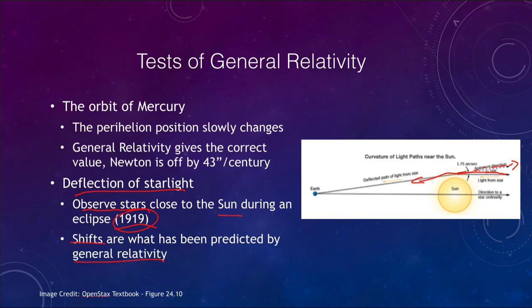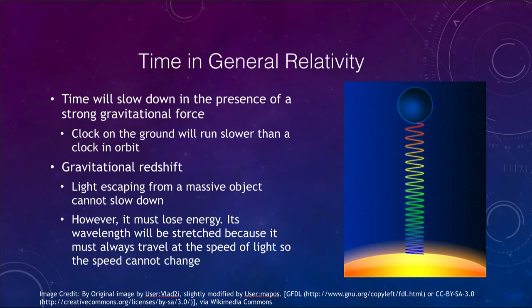Now general relativity looks not just at space but at time as well. So what happens with time in general relativity? A couple things that we see: time will slow down in the presence of a strong gravitational force, meaning that a clock on the ground will run slower than a clock in orbit. This can be tested as well. This is something we can do with very accurate atomic clocks. Having a clock here on the ground of the Earth and measuring it, putting another clock up in orbit and then comparing the two, we find that the clock on the ground will run slower than the clock up in orbit.